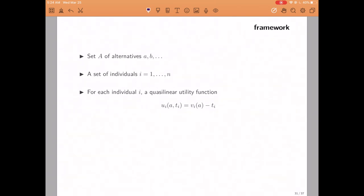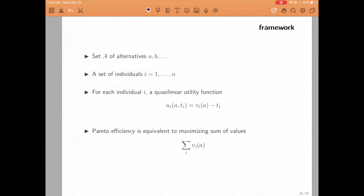In our general framework, there is going to be a set of alternatives to choose from. In the roommates problem, it was to buy or not to buy the espresso machine, a set of n individuals. In the roommates problem, we had two individuals, Frankie and Gary. And for each individual, a quasi-linear utility function that depends on the value that the individual obtains from the different alternatives minus the transfer that the individual has to pay. Sorry for writing type, it should say transfer, not type. In the case of the roommates, the value from buying the coffee machine was just a number, whereas the value of not buying the machine was equal to zero.